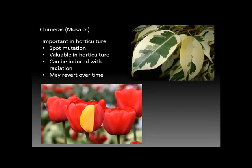I want to spend a couple of minutes here on chimeras, also known as mosaics. They have been historically important in horticulture. Some of them come about as a result of spot mutations — mutations that occur locally, such as the petal of a tulip which has been mutated from the red to a yellow variety.